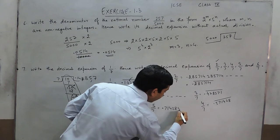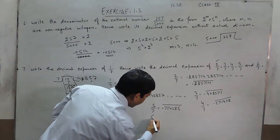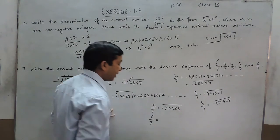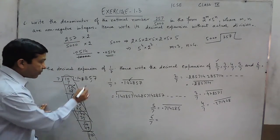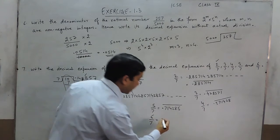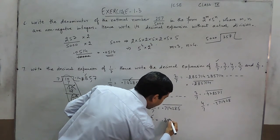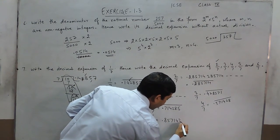And when we talk about 6 upon 7, then the process will start from this place. This place means starting from 8, so it is 0.857142 bar.